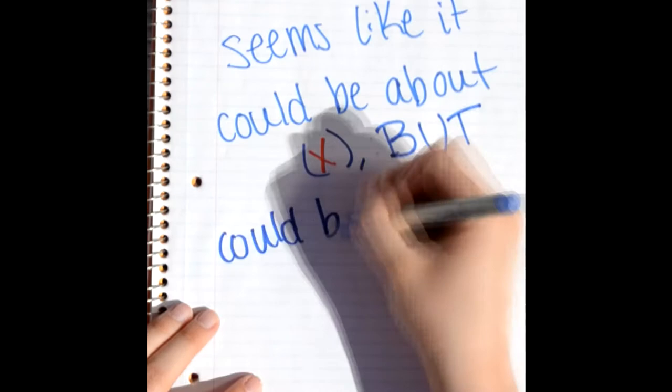The topic we'll be explaining is called Seems like it could be about X, but could be really is about Y. What does that mean, you ask?